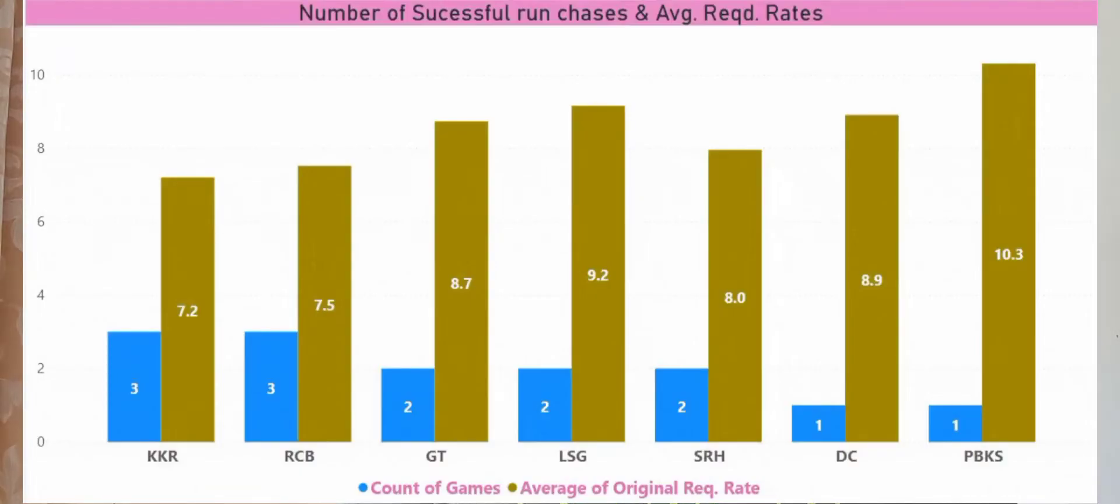As you can see, RCB and KKR have the highest number of run chases that they have successfully hunted down, but the required rate has been between seven to seven and a half, which isn't a very threatening or daunting required rate.